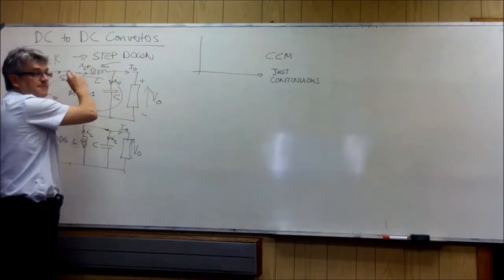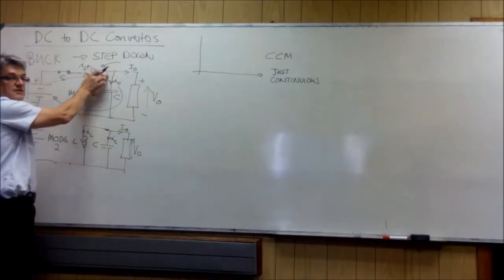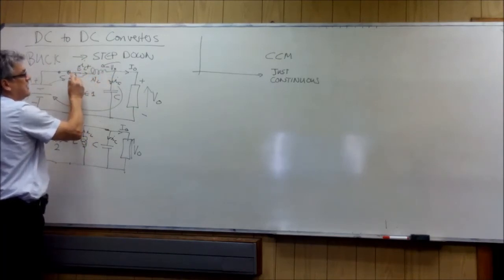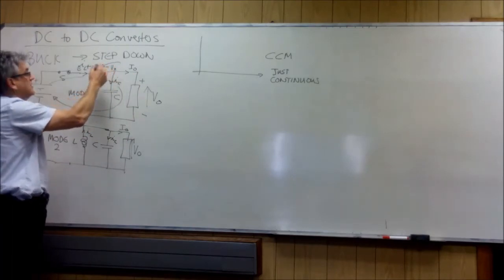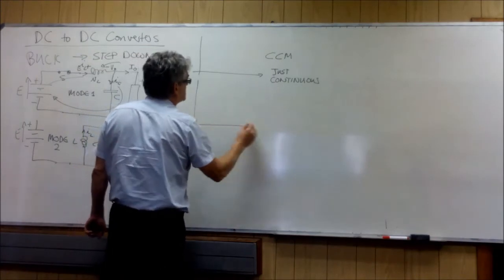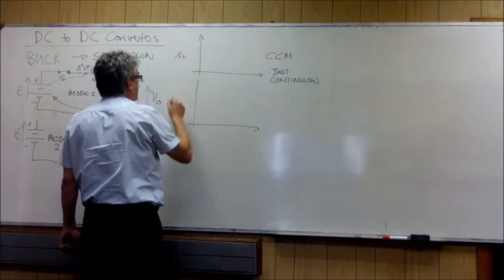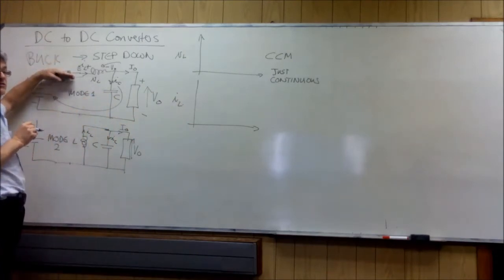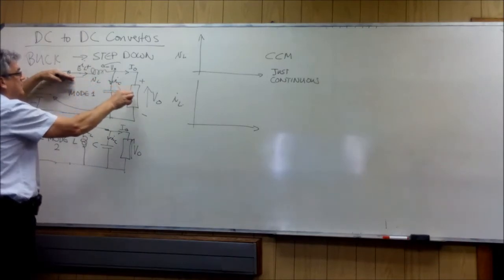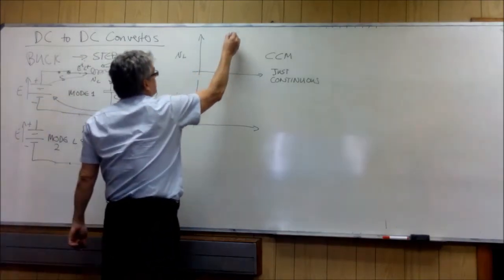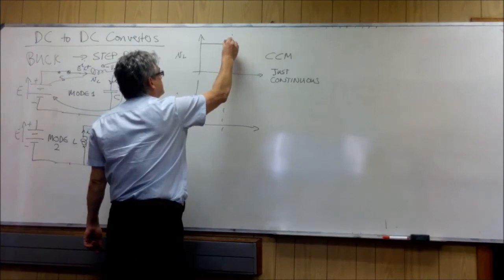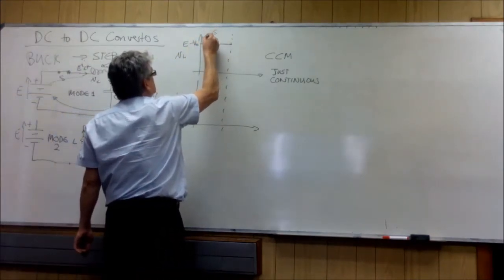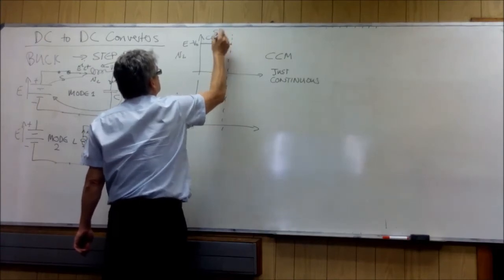When we close the switch, the voltage we are going to see over the inductor will be E on one side and V-out on the other — so the voltage over the inductor is E minus V-out. I keep the switch closed, and the voltage over the inductor stays at E minus V-out. So here, S is closed.